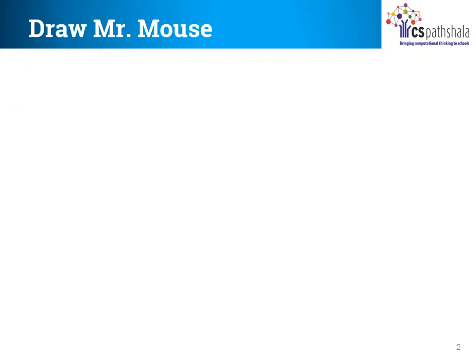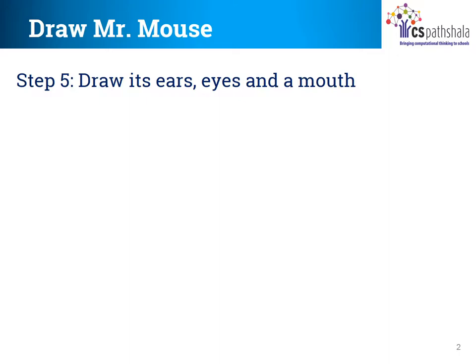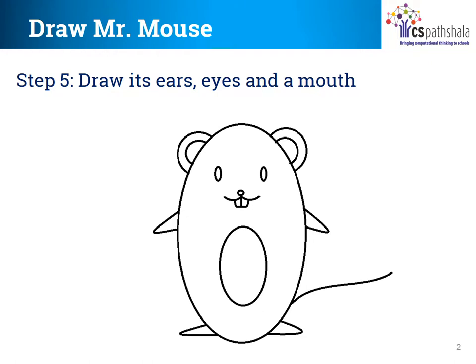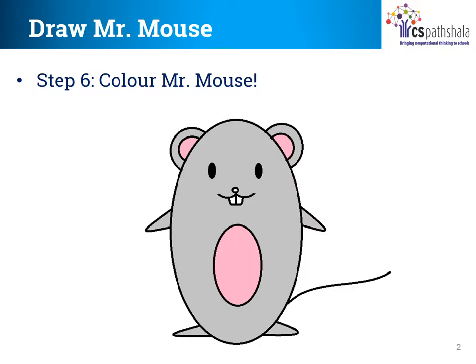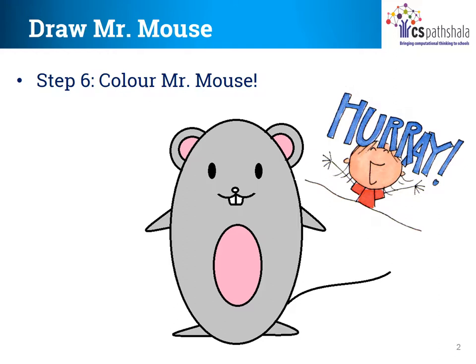Now this is the final step. Draw its ears, two small eyes, and a mouth. As you can see, these are its ears, two small eyes, and a mouth. Mr. Mouse does look complete, and we can also color him with grey and pink. He does look nice, right? Hooray! We completed drawing Mr. Mouse.